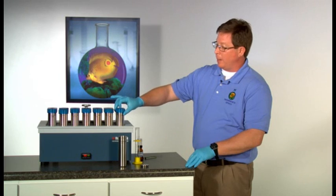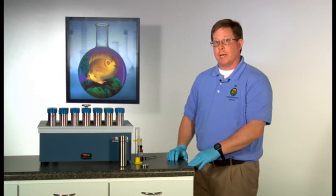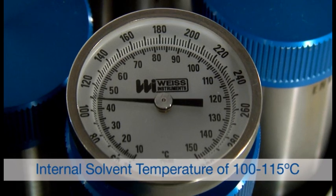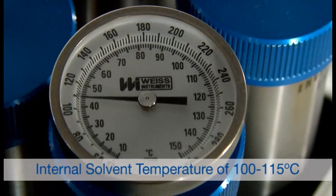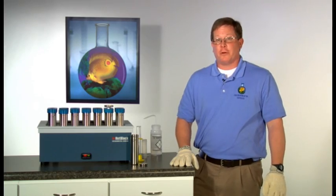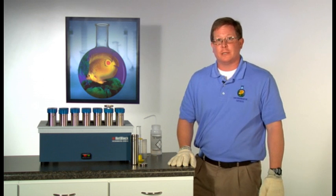Place the cell into the hot block. The hot block should be set at 130 degrees Celsius. This will provide an internal solvent temperature of 100 to 115 degrees Celsius, which is required by method 3546. Samples should be heated for 30 minutes at the 130 degrees Celsius set point.